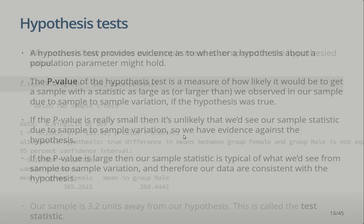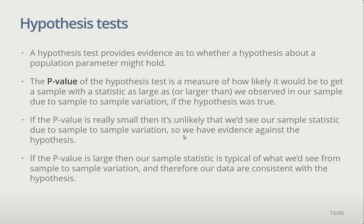Looking at the t-test outputs, the t value is our test statistic — the number of standard deviations we are away from the hypothesis. Here we're minus 3.23 standard deviations away, and that's used to compute the p-value. The p-value is the measure of how likely it would be to get a sample with a sample statistic as large or larger than we observe, due to sample-to-sample variation.